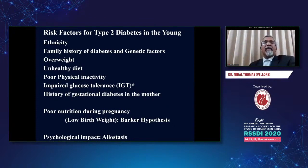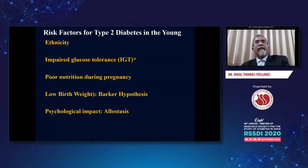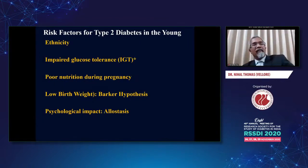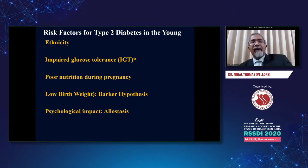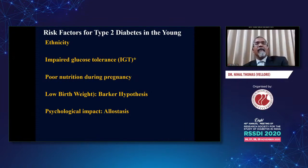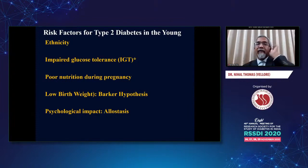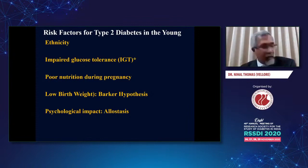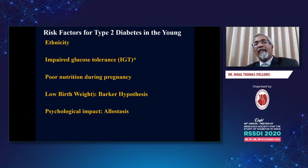If you look at ethnicity, there aren't too many studies in terms of differential ethnicity in young children across the country as far as diabetes is concerned, and there is very little to show there are differences despite the variable ethnicities in the country. Impaired glucose tolerance is important, as is poor nutrition during pregnancy — that is low birth weight or the Barker hypothesis — and I'll also talk about the psychological impact or allostasis.